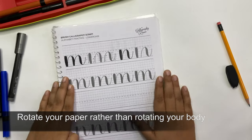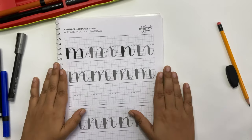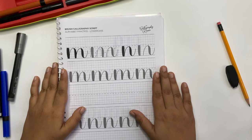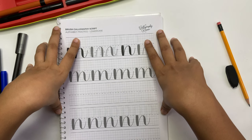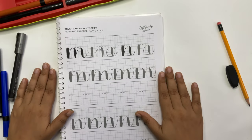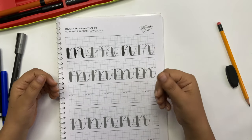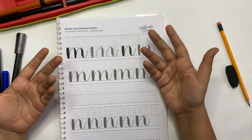Number 4. Rotate your paper rather than rotating your body. Yes, it's very important to maintain the right posture. Sometimes, we tend to hover over the paper or sit in an uncomfortable position. This leads to back and neck pain.